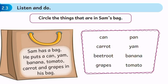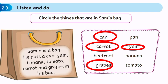See the next exercise, 2.3: Listen and do. Circle the things that are in Sam's bag. Sam has a bag. He puts a can, yam, banana, tomato, carrot and grapes in his bag. See the words and circle those that are in Sam's bag: can, carrot, grapes, yam, banana, tomato.